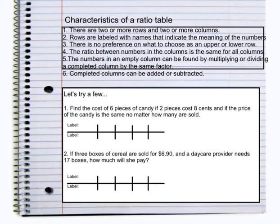Next up, I want to try a few of these tables. I want to see if we can complete a few of them. The first example that we have says to find the cost of six pieces of candy if two pieces cost eight cents, and if the price of the candy is the same no matter how many are sold.